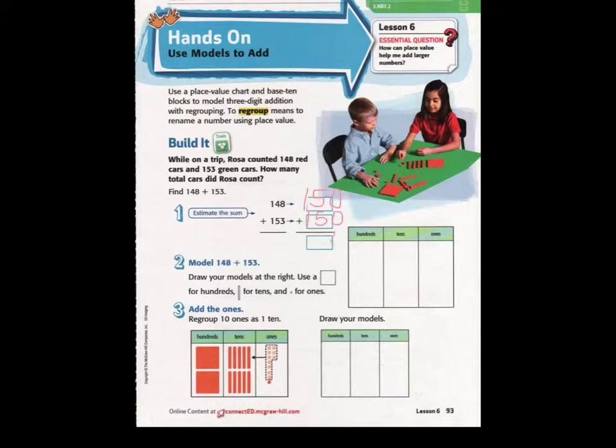If I add 150 and 150, I add my 1's to get 0, my 5 plus 5 is actually 10, so I regroup that 1 up here. I have three hundreds. My estimated answer is three hundred. So, let's start by drawing our model to the right. We will use a square to represent our 100's.